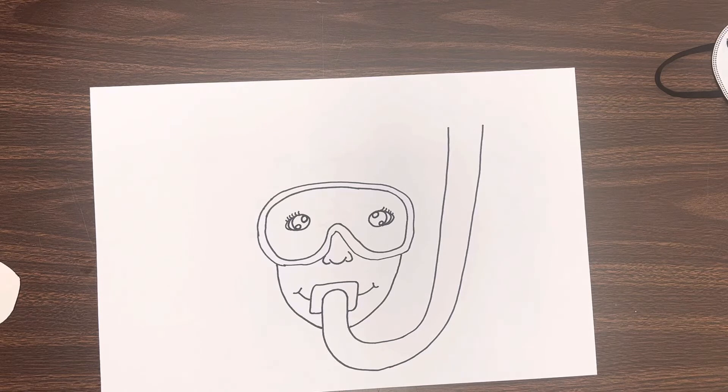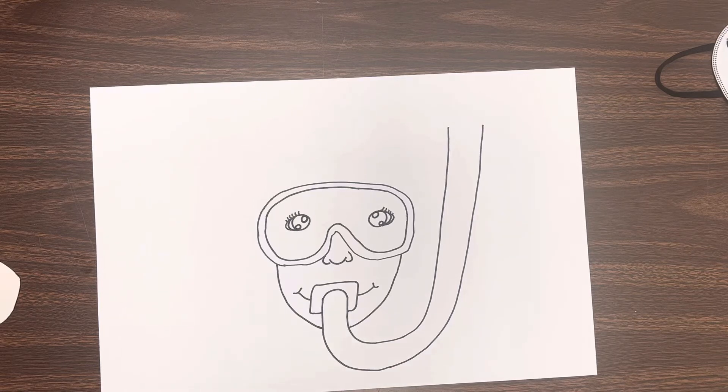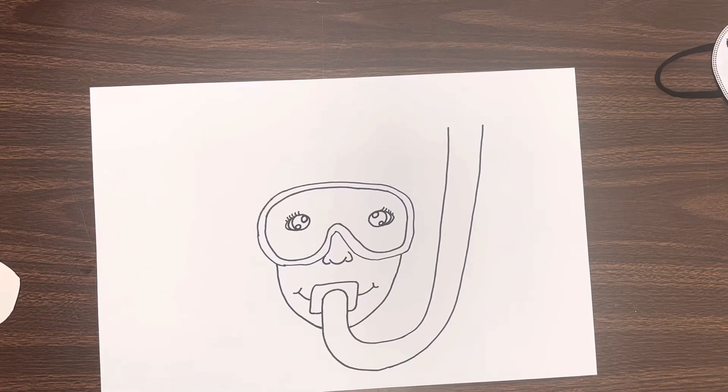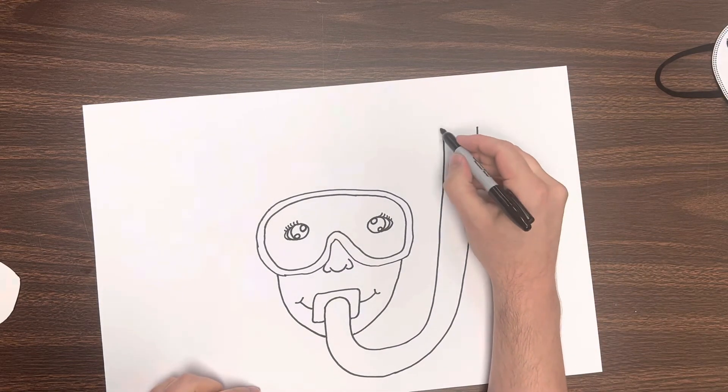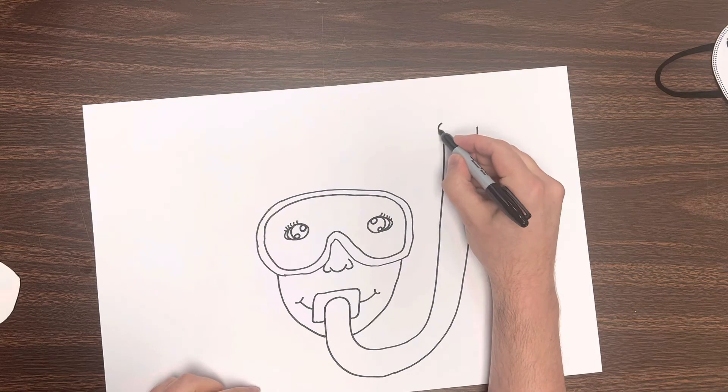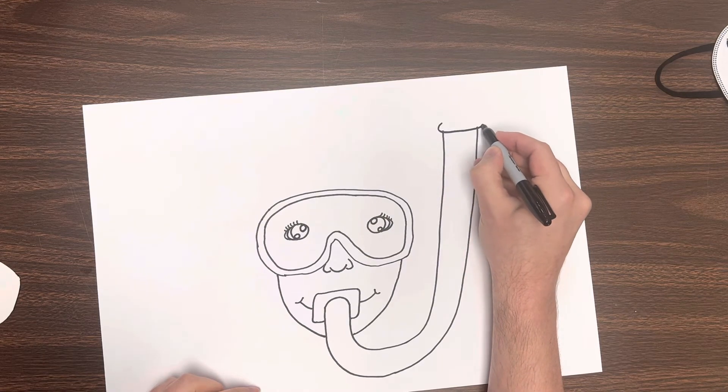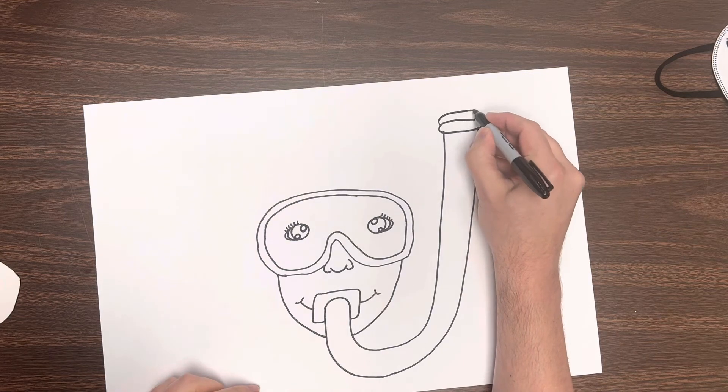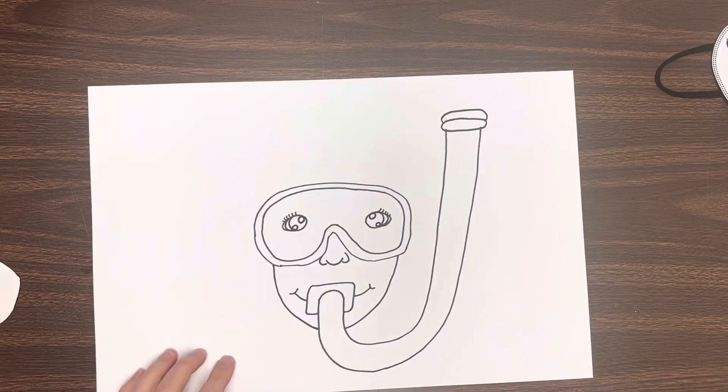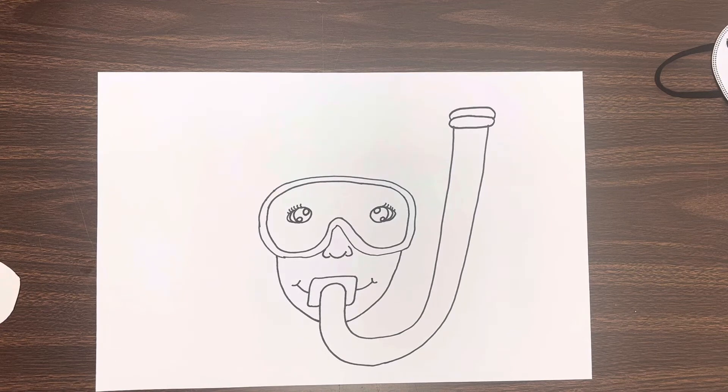So our underwater self-portrait is looking great. Now, next thing I'm going to do, I'm going to close off the top of my snorkel here. I'm going to draw a little ellipse. This is kind of like an oval shape. I'm going to draw another one on top of there. Just like that. Beautiful.